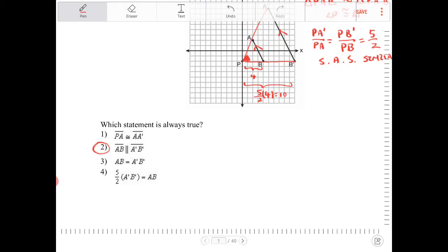Option number four doesn't make any sense because we're not dilating the image by 5 halves, we're dilating the original by 5 halves. So what really should be stated here is AB times 5 halves should equal to A'B'. That should be the correct statement.